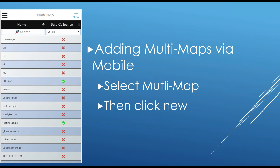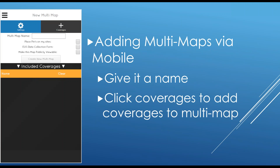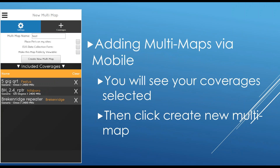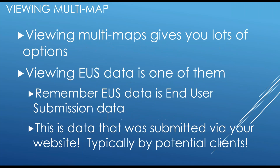Adding multi-maps via the mobile website works the same way — click New, give it a map name, then click the Coverages button. Due to limited screen real estate, you select which coverages to add, hit the Coverages button again to return and see the included coverages, then create your new multi-map.